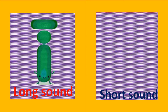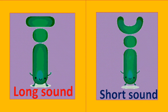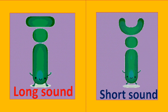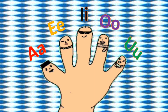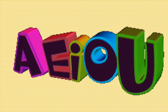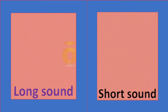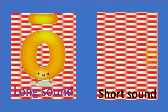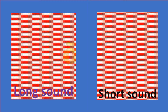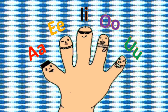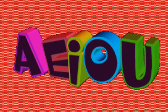Here is I. There is A. Here is I. There is I. Here we have five vowels: A, E, I, O, U. Here is O. There is A. Here is O. There is A.